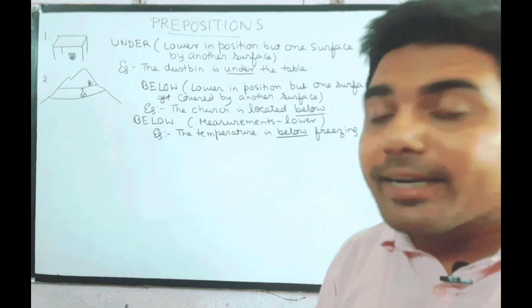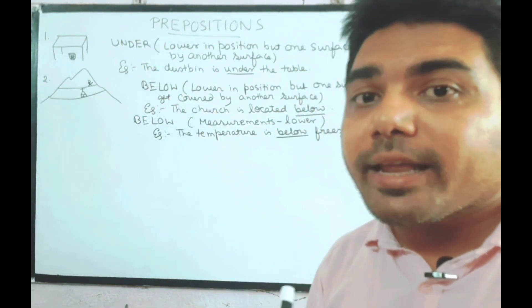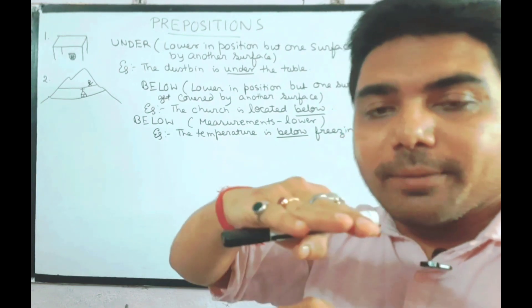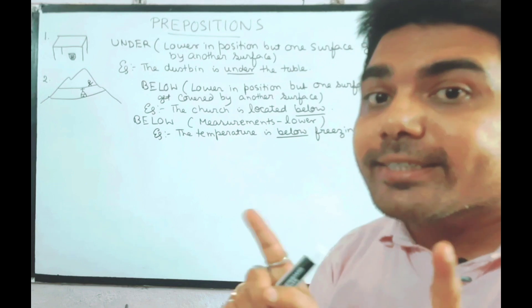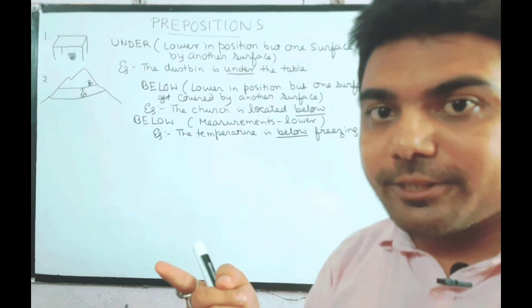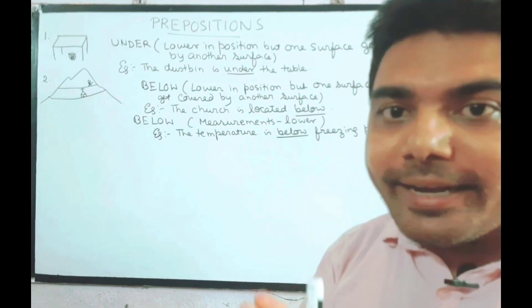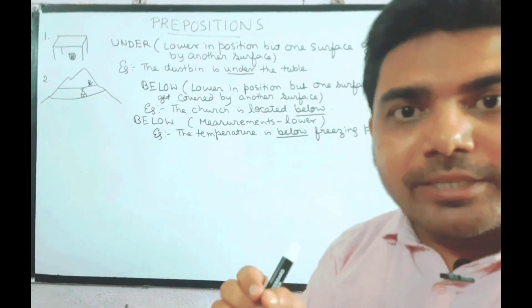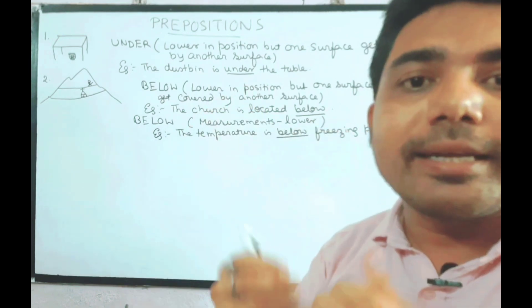So friends, is the difference between under and below clear? Under we use when the surface gets covered by another surface. In case of below, the surface will not get covered by another surface, it's just lower in position. Below is also used to indicate some measurements or below some particular point.